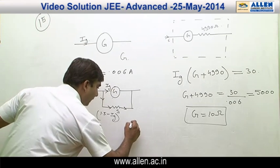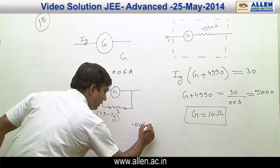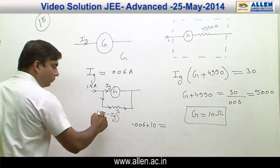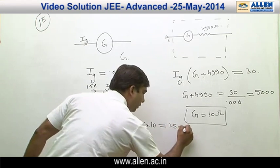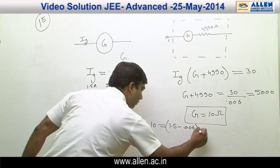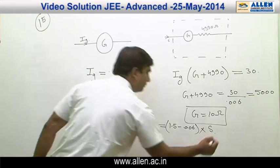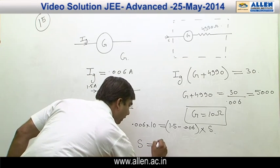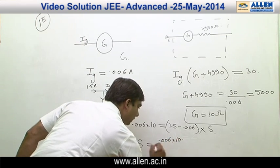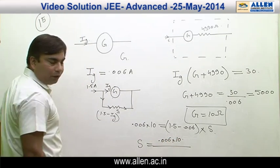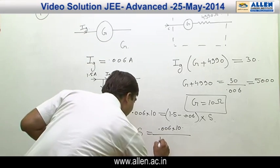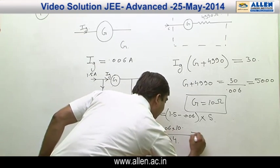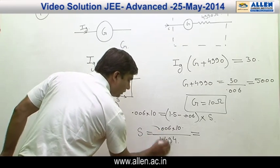Setting up the equation: IG × G = (1.5 − IG) × S, that is 0.006 × 10 = (1.5 − 0.006) × S. Solving, S = (0.006 × 10) / (1.5 − 0.006) = 0.06 / 1.494.